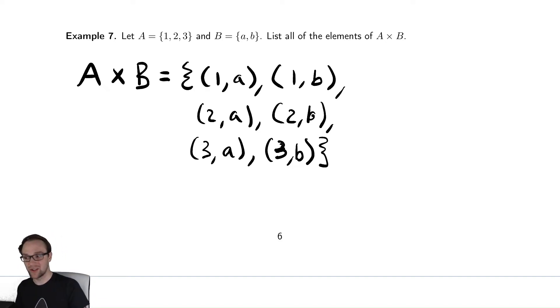In terms of cardinality, it shouldn't be surprising that this contains six elements because one of them contained three and the other contained two, so multiplying those two things together makes perfect sense. We called this operation times, so multiplying the sizes seems like a reasonable thing to expect for the final result. So this is all the things where the X component comes from A and the Y component comes from B.